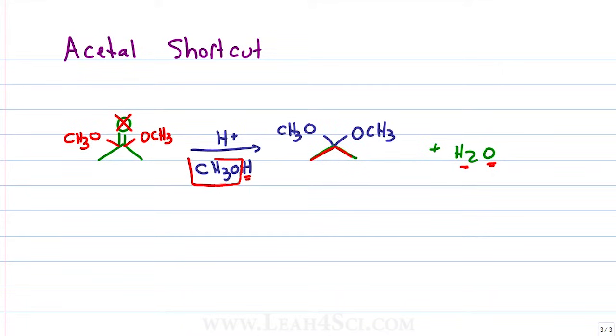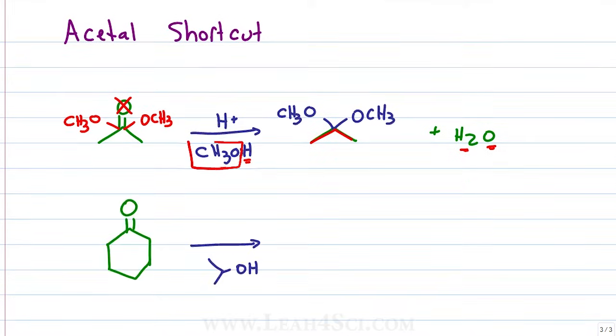Which is exactly what we see here. We have the starting carbon chain and the two OR groups. This works no matter how complex your starting material or your alcohol. In this case we have cyclohexanone so we cut off the oxygen.